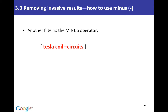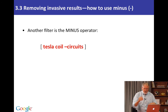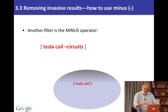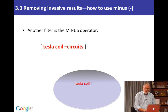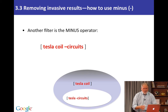Here the query is 'tesla coil minus circuits'. So when we do the query 'tesla coil', we get a bunch of results, and 'minus circuits' says let's knock a hole in that set of results. Here we see the set of results represented by that oval. So now we want to see those results without the word 'circuits' in it — this knocks a hole or filters the results down to just the stuff you want to see.